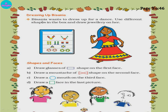Next - Dressing up Bisanya. Bisanya wants to dress up for a dance. Use different shapes in the box and draw jewelry on her. For example, make a chain using circles and squares, make earrings, a headband, and bangles. Next, shapes and faces: draw glasses of rectangle shape on the first face. Draw a mustache of two triangles joined together on the second face. Draw an oval mouth on the third face. Draw a square face on the last picture.